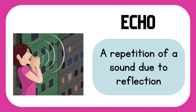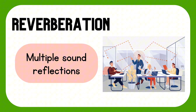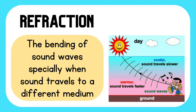Another example of the reflection of sound is reverberation — that is multiple sound reflections. That's the reason why movie theaters use curtains and other materials that could lessen the reverberation in a room. The next property of sound is refraction — the bending of sound waves, especially when sound travels to a different medium. It could either be solid, liquid, or gas.